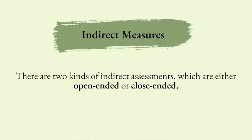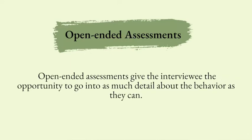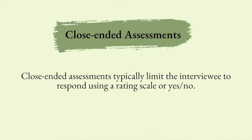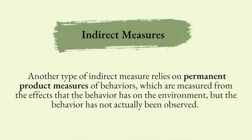When interviewing an individual — let's say we're talking about the caregiver — there are two kinds of indirect assessments: open-ended or close-ended. Open-ended assessments give the interviewee the opportunity to go into as much detail as possible about the particular behavior. Close-ended assessments typically limit the interviewee to responding to a scale or saying yes or no. Another type of indirect measure relies on permanent product measures of behavior, which are measured from the effects the behavior has on the environment, but the behavior has not actually been observed.